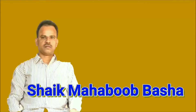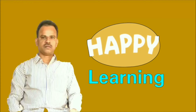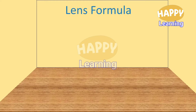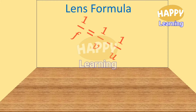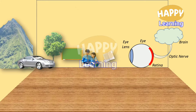Hi, I am Sheik Mahbubbasha. Welcome to my channel, Happy Love. This video is a funny animation to explain the relation between U, V and F of the lens and hence accommodation of the eye.